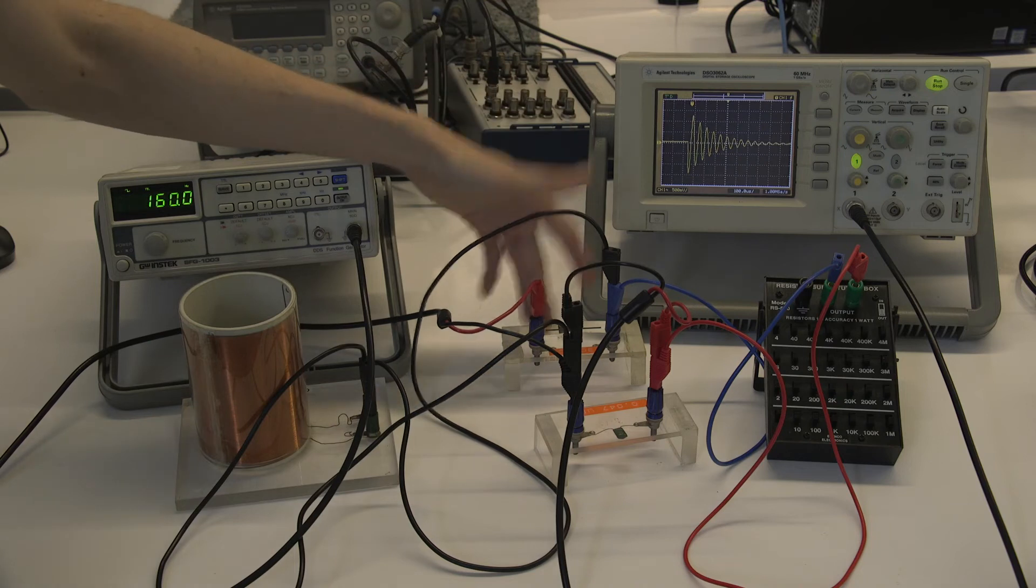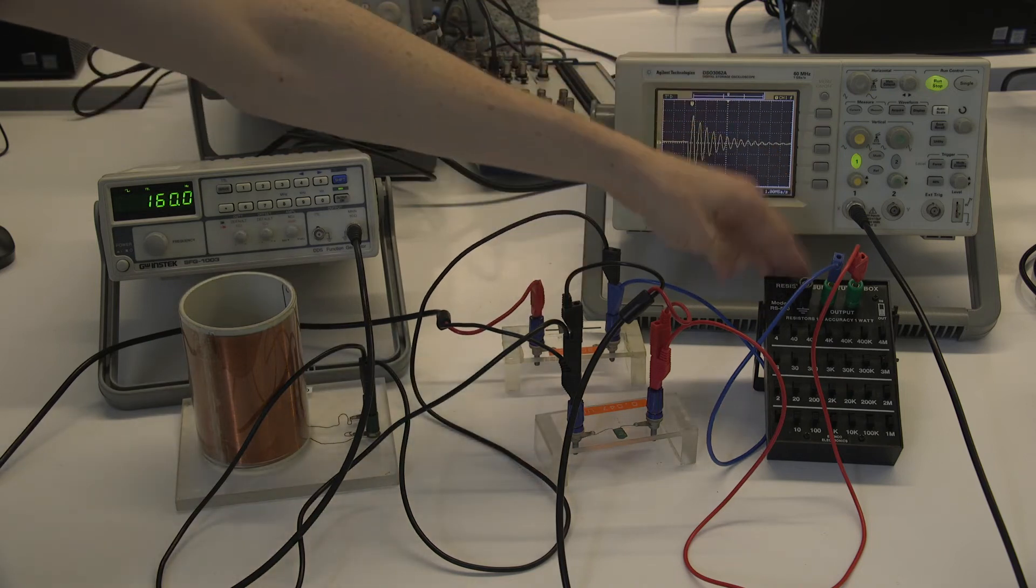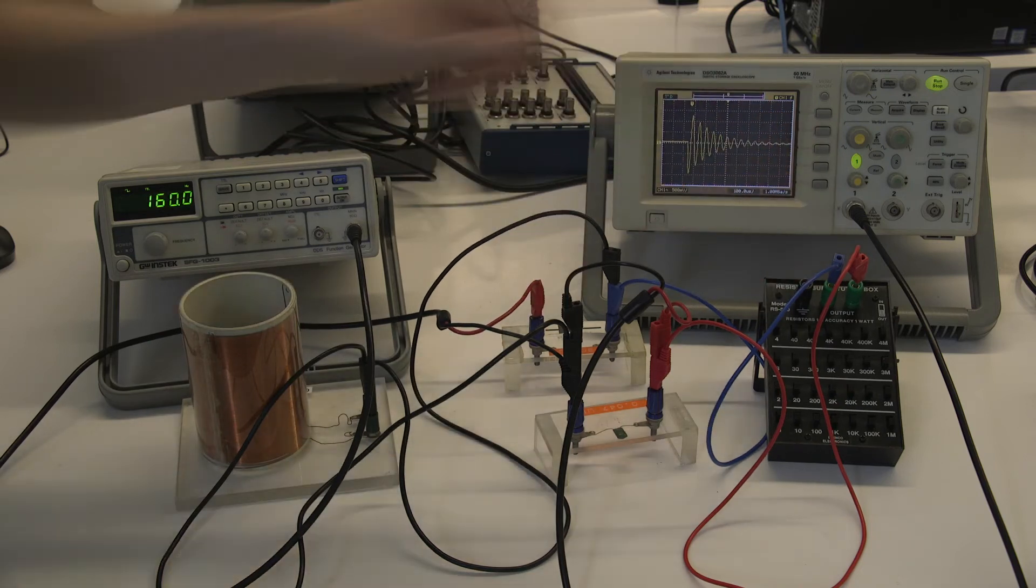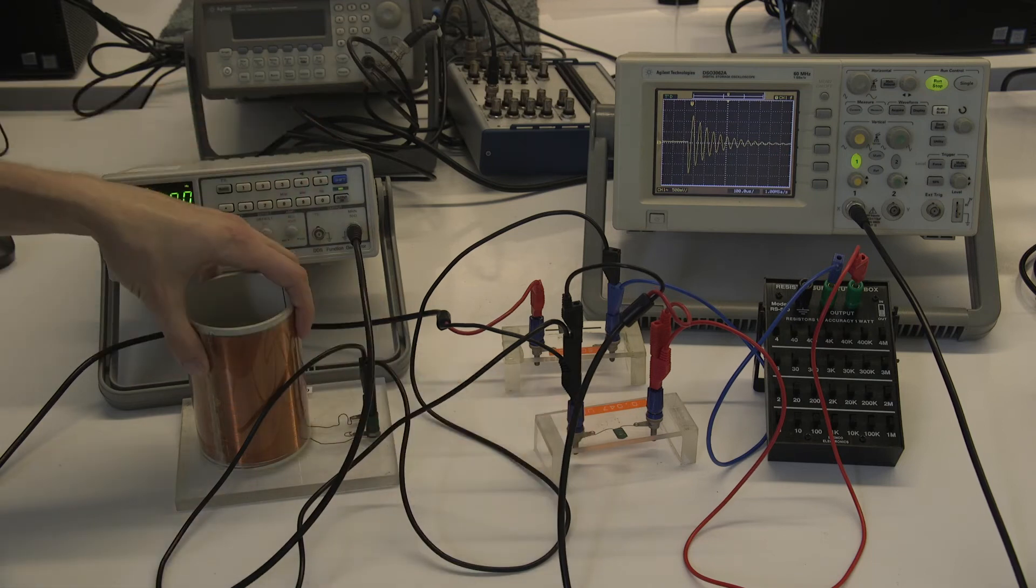So we have a couple of different components. There's a diode here, a resistor box which has a variable resistance, a capacitor, and an inductor.